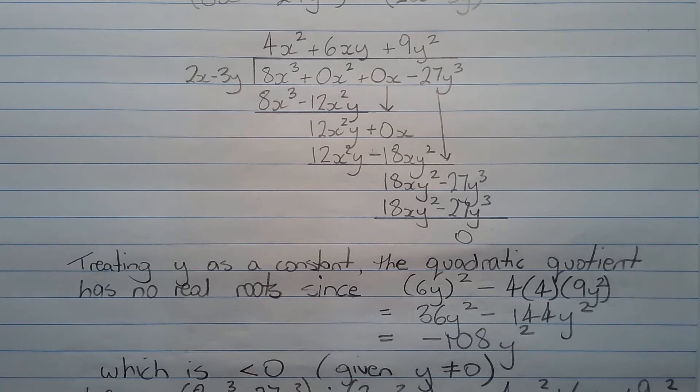which is less than 0. The b squared minus 4ac, which is under the radical, is negative, meaning no real roots, assuming that y does not equal 0.